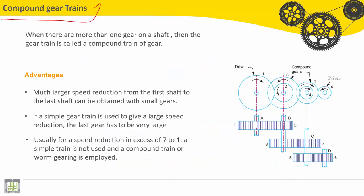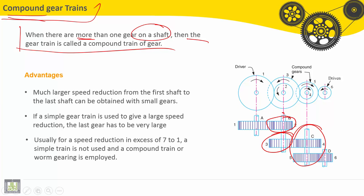Let's move now to compound gear trains. So when there are more than one gear on a shaft, then the gear train is called compound train of gears. We can see here for this shaft, we can find two gears. Here also for one shaft we have two gears. This is called compound gear trains.